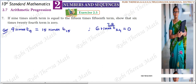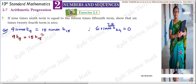So we are going to prove this. 9 times — it is nothing but multiplication. 9 into T9 equals 15 into T15. This is the data given to us. We know the general term, the nth term, can be represented as a plus (n minus 1) into d.